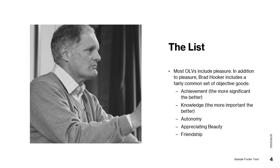If we're going to be talking about a list, we may as well use Brad Hooker's example from the reading. The list Hooker gives us includes a pretty common set of objective goods: achievement is very often cited, as well as knowledge, autonomy, appreciating beauty, and friendship. Not all of these things are created equal — the more significant the achievement, the more it contributes to a life well-lived; the more important the knowledge, the more it contributes to one's well-being, even if it doesn't create pleasure or nobody pays you for it.